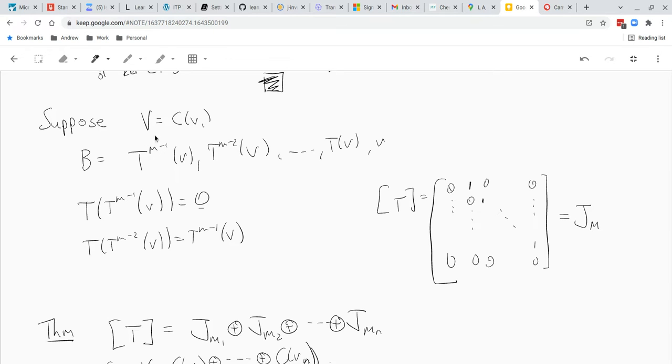Okay so let's suppose that V is a cyclic subspace C of V1. So C of V1 is just a span of these vectors. So let's take this as our basis,